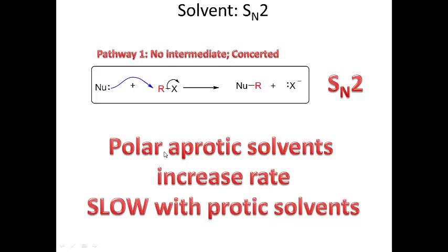Remember for the SN2, it's a one-step concerted mechanism. That's the rate-determining step where the nucleophile comes in and attacks, then you lose your leaving group — no intermediate. For this type of reaction going through an SN2 mechanism, the type of solvent that is good is a polar aprotic solvent. Polar aprotic solvents increase the rate; these reactions are slow with polar protic solvents.